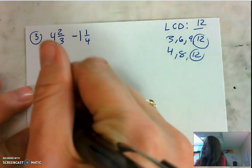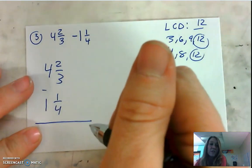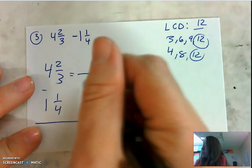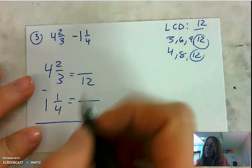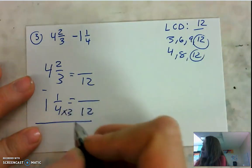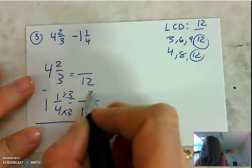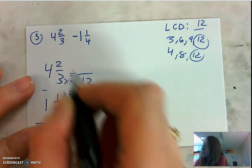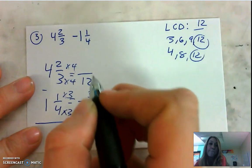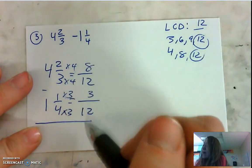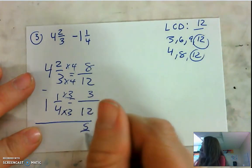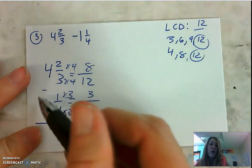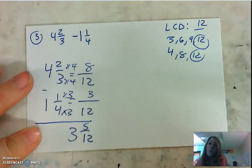We're going to rewrite those fractions vertically, making sure we line up our whole numbers with our whole numbers and our fractions with our fractions. We're going to create those equivalent fractions with a denominator of 12. Fourths to twelfths, times 3 — what you do to the bottom, you do to the top — 1 times 3 is 3. Thirds to twelfths, times 4 — what you do to the bottom, you do to the top — 2 times 4 is 8. Now I have common denominators, so I can subtract 8 twelfths minus 3 twelfths, which gives me 5 twelfths. Don't forget those whole numbers — 4 minus 1 is 3, which gives us an answer of 3 and 5 twelfths.